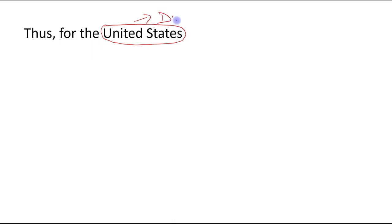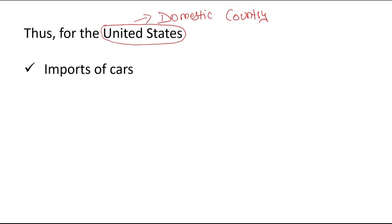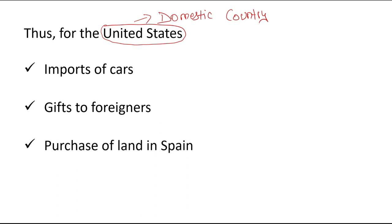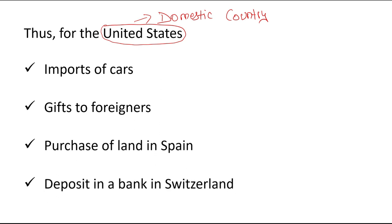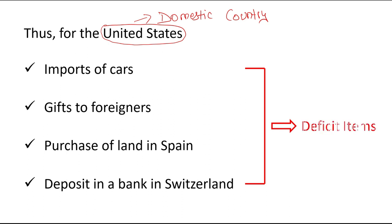For the United States, considering it as the domestic country, import of cars, gifts to foreigners, purchase of land in Spain, and deposits in a bank in Switzerland — all these items will be considered deficit items in the United States' balance of payments, because all these transactions give rise to a payment.